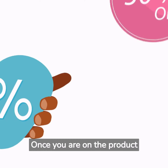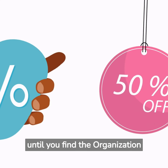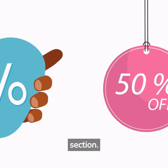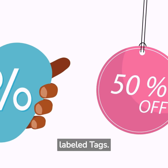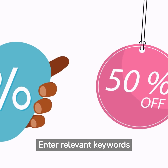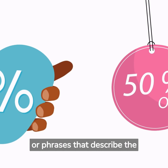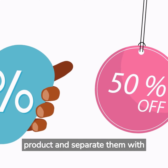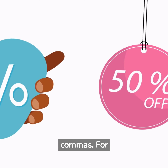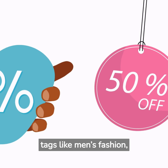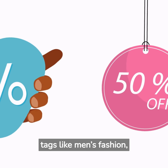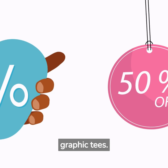Adding tags to the product. Once you are on the product details page, scroll down until you find the Organization section. Here, you will see a field labeled Tags. Enter relevant keywords or phrases that describe the product and separate them with commas. For example, if you are selling t-shirts, you might use tags like men's fashion, summer collection, or graphic tees.